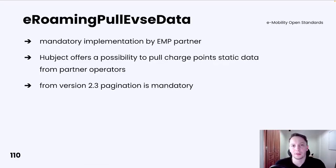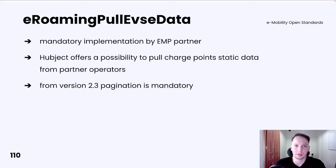In this service, EMP has its own operation which allows it to pull EVSE static data from partner operators. This can be done with the eRoaming pull EVSE data operation. Its implementation is mandatory for every EMP partner.